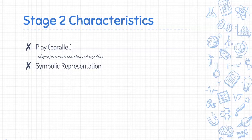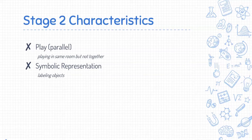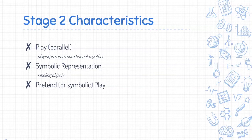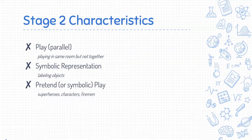Symbolic representation is another characteristic displayed toward the beginning of this stage. It describes how a child learns to use something to represent another thing — this is key in language development, as a child begins to learn labeling and the naming of objects. As they develop, they will move on to pretend or symbolic play, where the child begins to take on pretend roles, such as putting on a cape and becoming Superman, or mimicking a favorite TV character or a firefighter. Developing symbolic play does demonstrate the decline of egocentrism, as children begin to play with one another and cooperate as they engage in the same games.